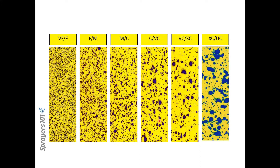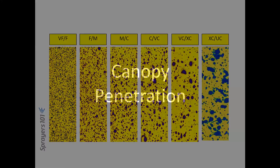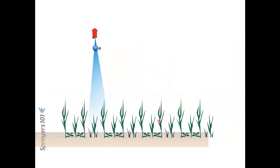Water sensitive papers provide instantaneous visualization. They're qualitative for the most part — you get a feel for whether coverage is good or not. But you can also get apps that take a picture of the card and give you a coverage number for quantitative comparisons.